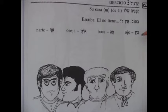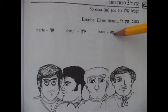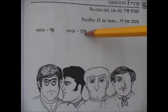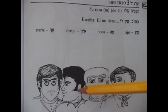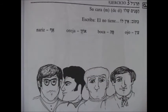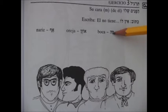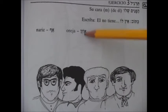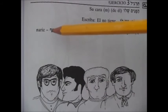Vamos a leer. Ein — acuérdense de la forma gutural de la Ein. No nos suena Ein, sino Ein. Ein, ojo. Pe, boca. Ozen, oreja. Af, nariz. Vamos a repetir: Ein, Pe, Ozen, Af.